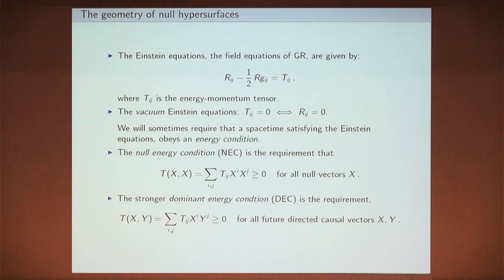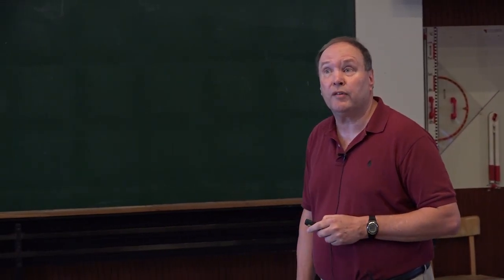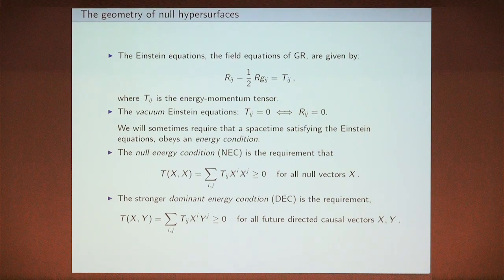Here are the Einstein equations — at least for now I'm not including the cosmological constant. The Einstein equations describe how spacetime curves in the presence of matter, and it's this curvature that's responsible for the effects of gravity. The left-hand side is the purely geometric Einstein tensor, and the right-hand side is the energy-momentum tensor containing all information about energy and momentum of matter fields and non-gravitational fields like the electromagnetic field. The vacuum Einstein equations are obtained by setting the energy-momentum tensor to zero, which is equivalent to the Ricci tensor of spacetime vanishing — vacuum means Ricci flat.